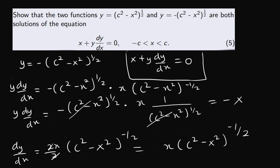Substituting into the differential equation: x plus y dy over dx, and we know that is minus x, so x minus x equals zero. This means the second function also satisfies the given differential equation. That's all for this lesson.